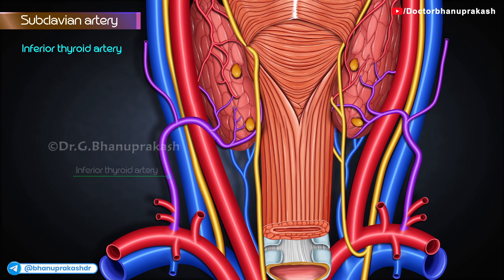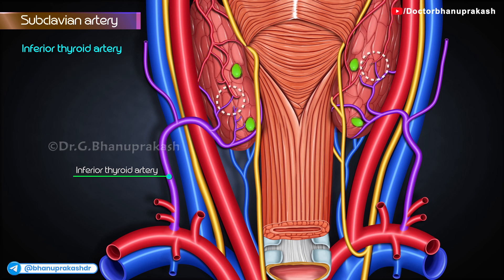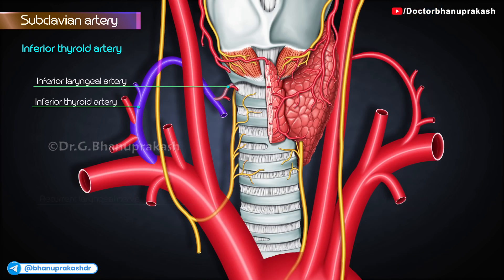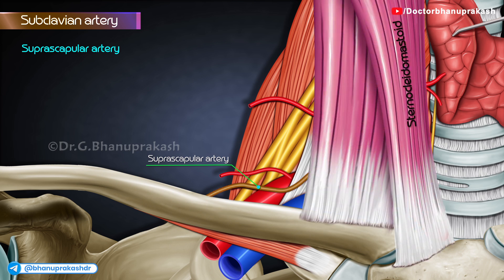The artery divides into four to five glandular branches which pierce the fascia separately to reach the lower part of the gland. One ascending branch anastomoses with the posterior branch of the superior thyroid artery and supplies the parathyroid glands. In addition to glandular branches to the thyroid, it gives the ascending cervical artery, which runs upwards in front of the transverse processes of cervical vertebrae, and the inferior laryngeal artery, which accompanies the recurrent laryngeal nerve and enters the larynx deep to the lower border of the inferior constrictor. The suprascapular artery lies behind the internal jugular vein and the sternocleidomastoid.